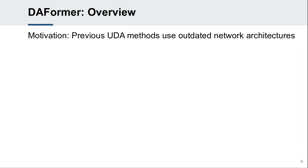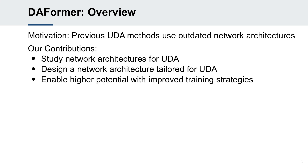Previous UDA methods mostly use the DeepLab v2 network architecture. However, in the field of supervised semantic segmentation, DeepLab v2 is significantly outperformed by more recent networks. It stands to question whether using an outdated architecture might limit UDA. Therefore, this work studies the influence of the network architecture on UDA, compiles a more sophisticated architecture, and successfully applies it to UDA with a few simple yet crucial training strategies to enable the full potential of the proposed network.